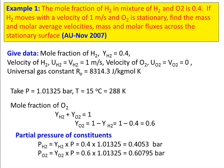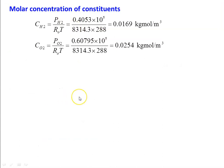We calculate the partial pressure of the constituents. PH2 = YH2 × total pressure = 0.4 × 1.01325 = 0.4053 bar. PO2 = YO2 × total pressure = 0.6 × 1.01325 = 0.60795 bar. We calculate the molar concentration of the constituents. CH2 = PH2 / (R0 × T) = 0.0169 kg·mol/m³. CO2 = PO2 / (R0 × T) = 0.0254 kg·mol/m³.